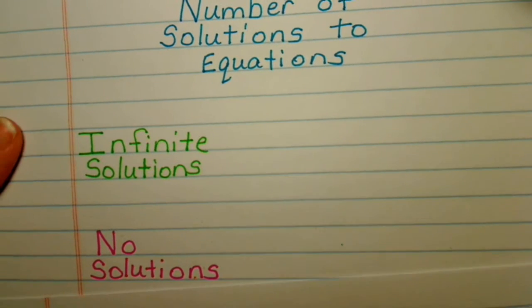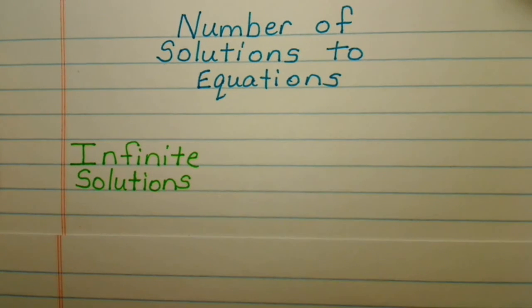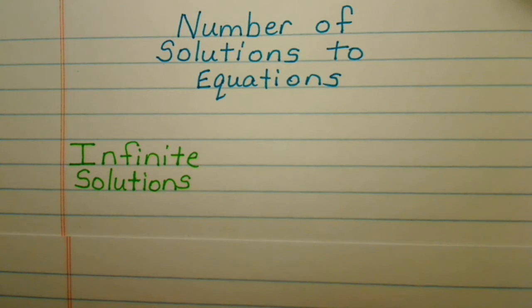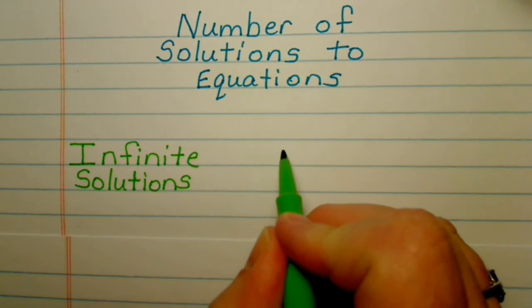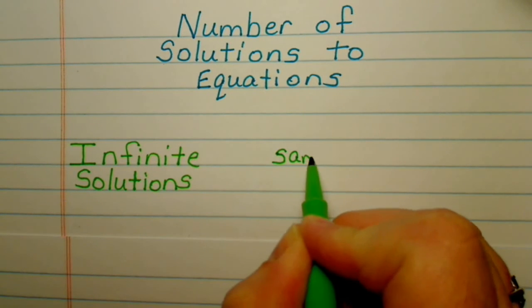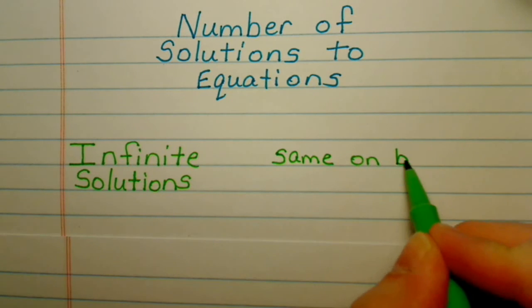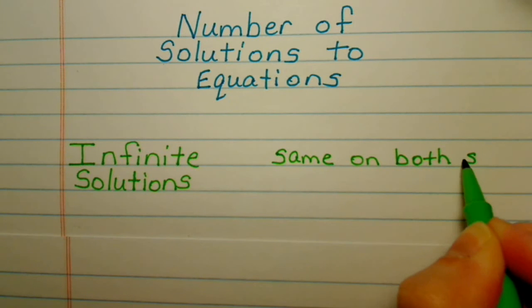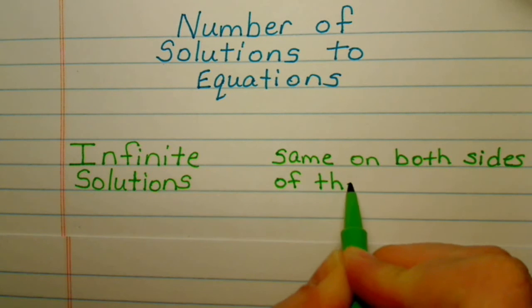If you are in the process of solving an equation and you get down to a place where you have the exact same thing on both sides of the equal sign, that means you have infinite solutions. So it's when you have the exact same on both sides of the equal sign.